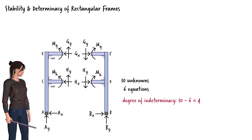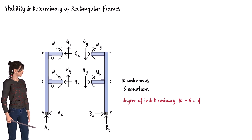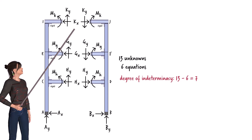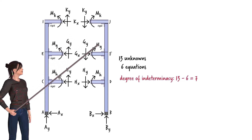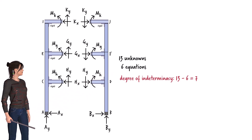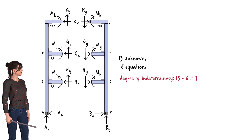Let's consider how adding another level to the frame affects the degree of indeterminacy. With the additional level, we introduce three more unknown forces, bringing the total number of unknown forces to 13. However, the number of static equilibrium equations remains the same, 6. Therefore, the frame with three levels is indeterminate to the 7th degree.